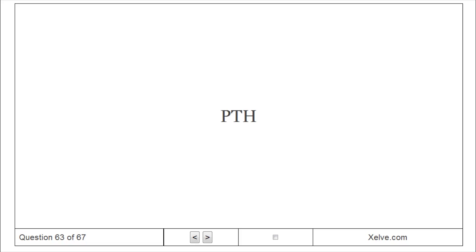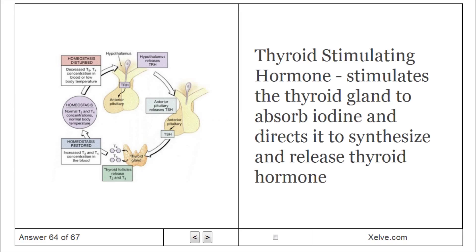PTH: parathyroid hormone. TSH: thyroid-stimulating hormone. Stimulates the thyroid gland to absorb iodine and directs it to synthesize and release thyroid hormone.